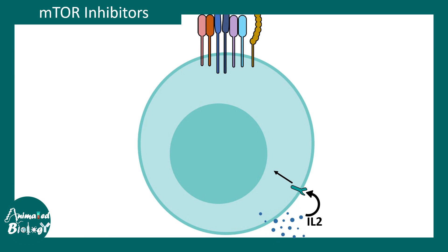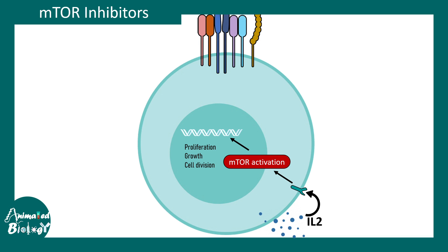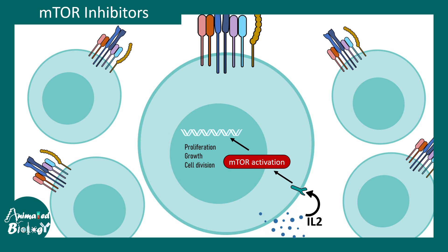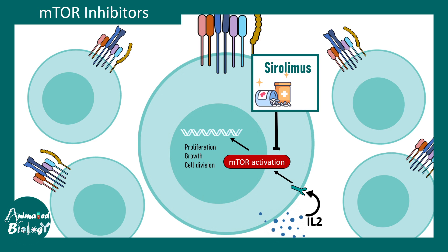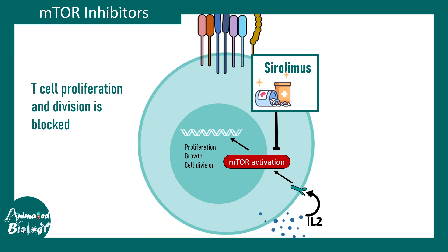The next group of immunosuppressants are mTOR inhibitors. The mTOR/AKT signaling pathway is important for growth and division. IL-2 signaling activates mTOR, which leads to transcription factors producing genes and proteins involved in cell proliferation, growth, and division — critical for T cell expansion. mTOR inhibitors block this activation; the key drug is rapamycin, also known as sirolimus. When mTOR is inhibited, proliferation and division are blocked, preventing autoreactive T cell generation.